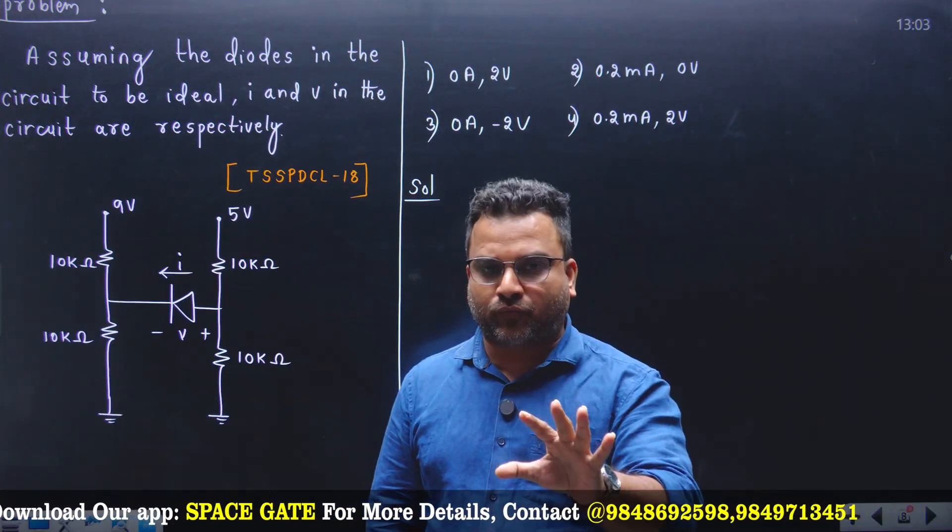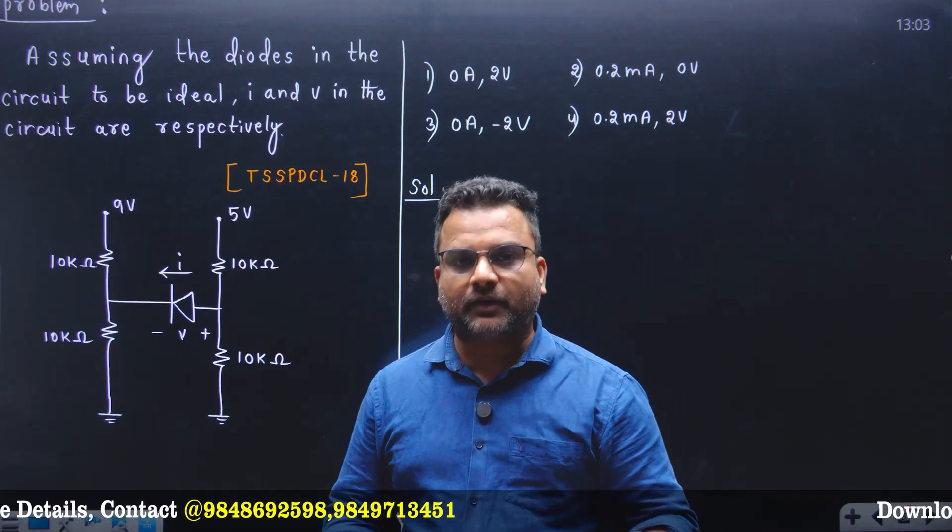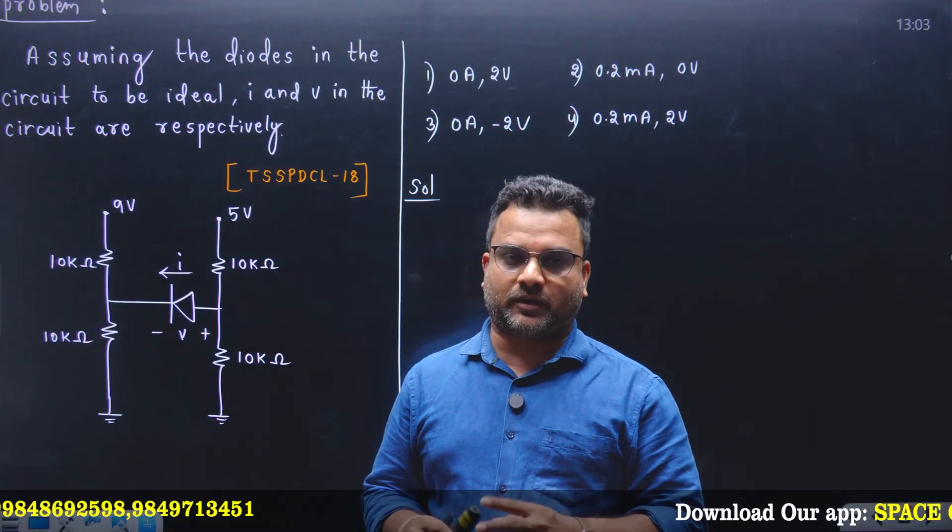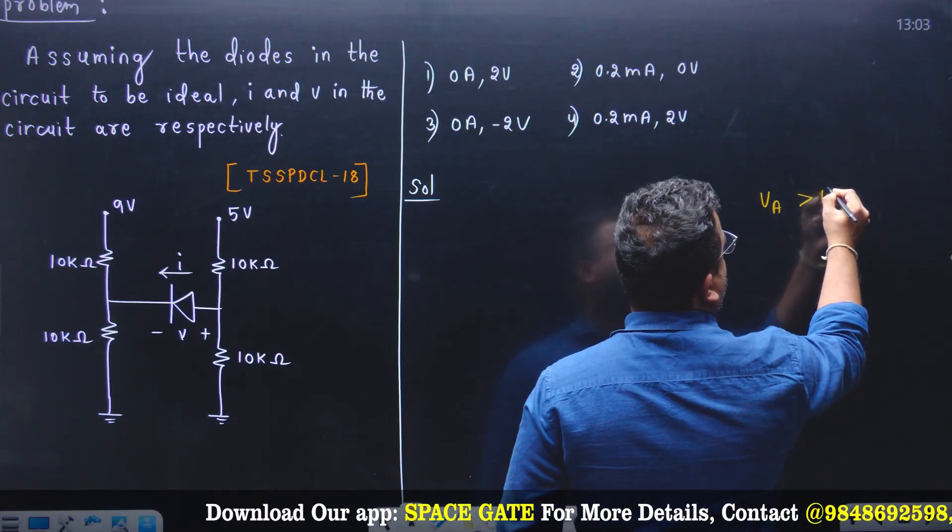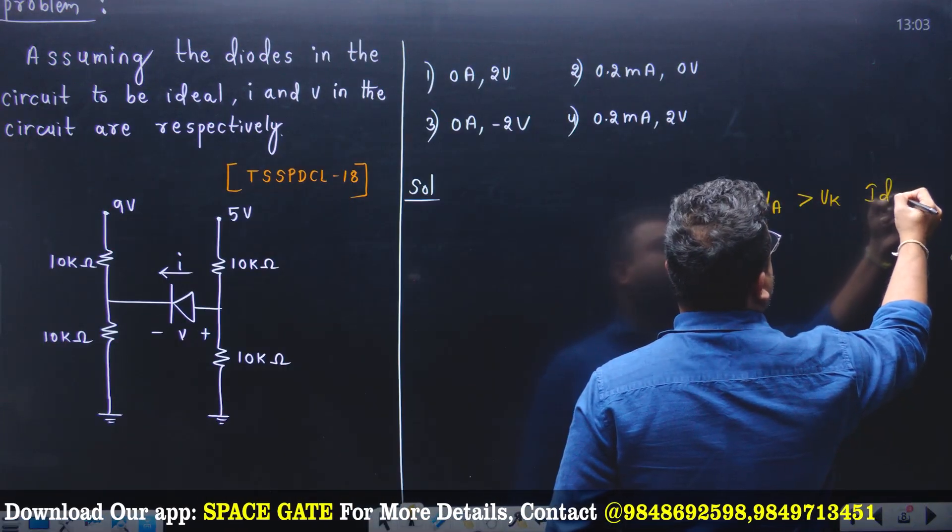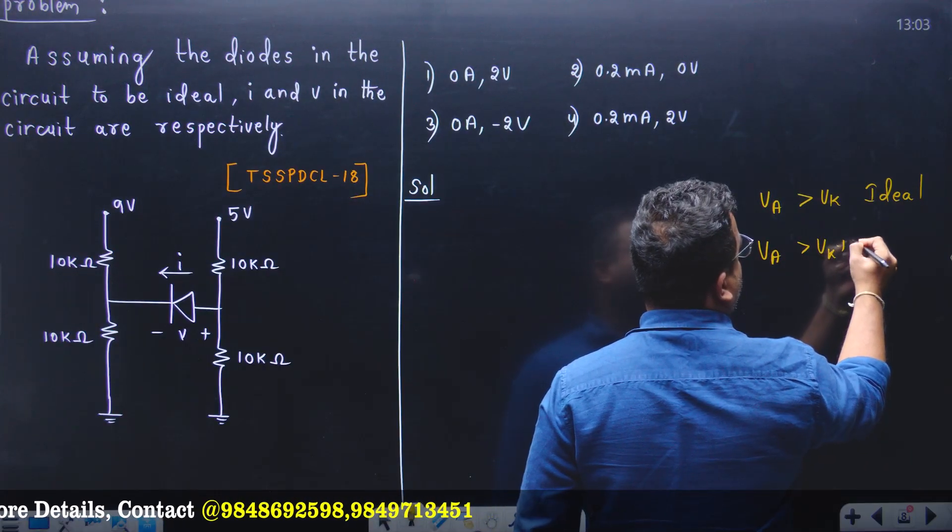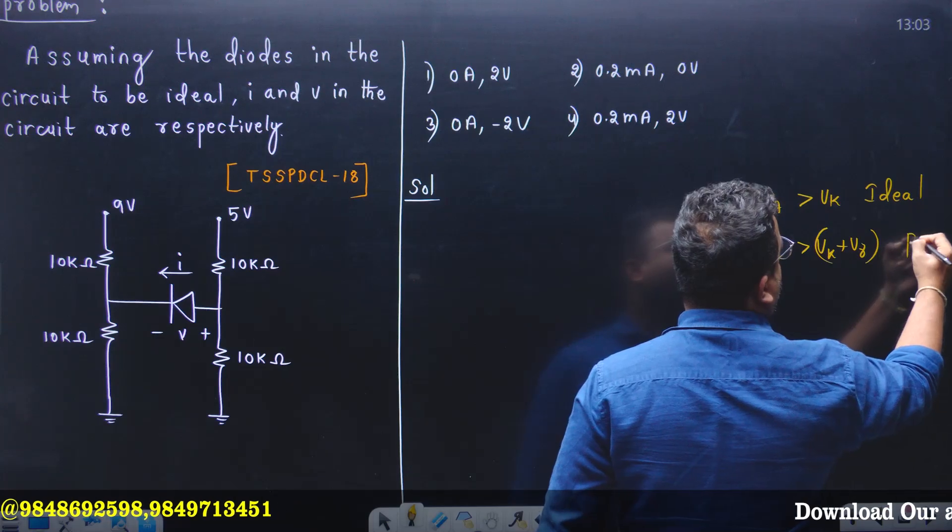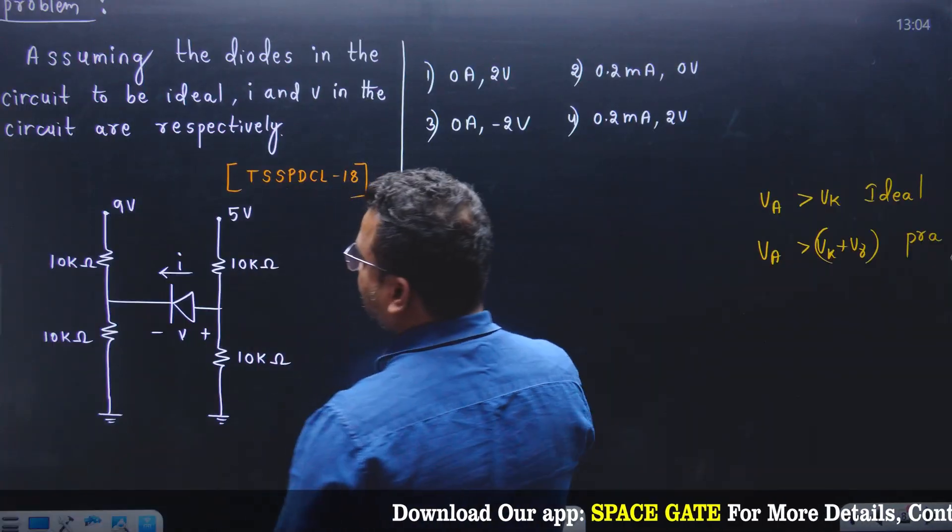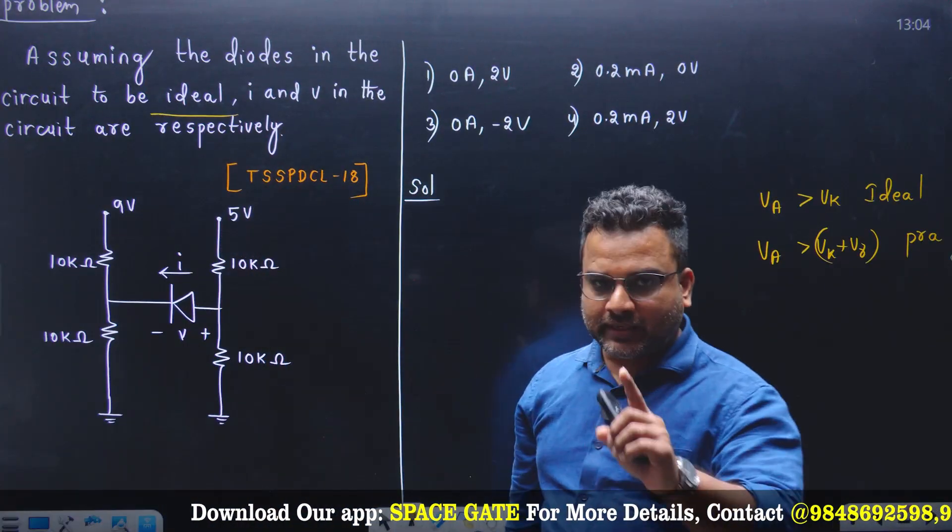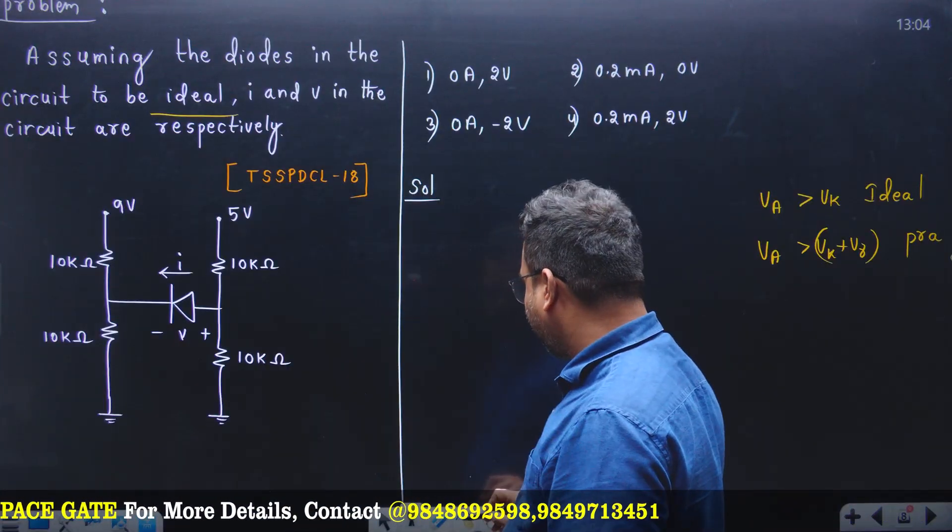See whether anode voltage is more than cathode voltage or not. If it is an ideal diode, VA greater than VK. If it is a practical diode, VA greater than VK plus V gamma. That gives you the condition for the on state forward bias. In the given question they said ideal, so the condition is VA greater than VK. Let's assume the diode is in open circuit.